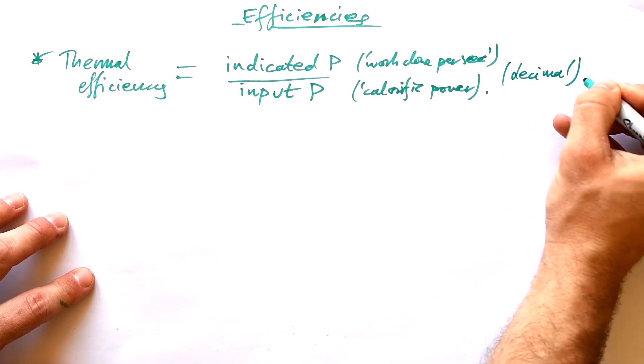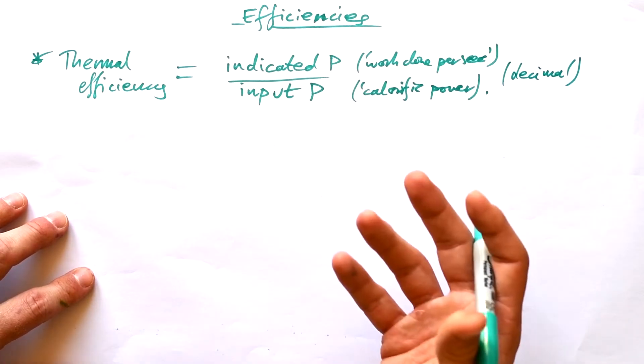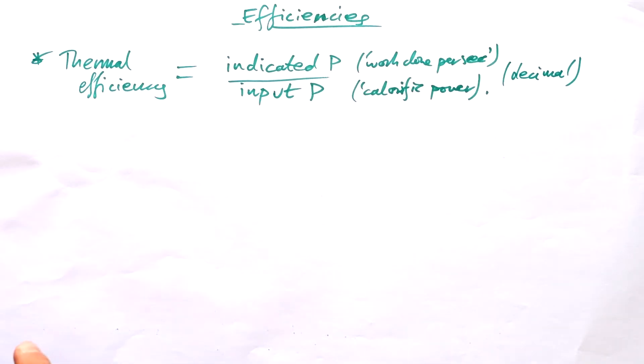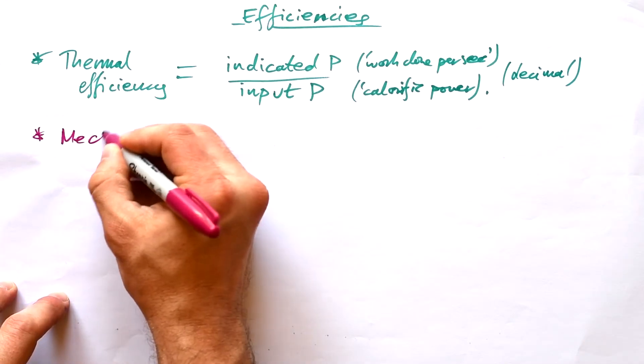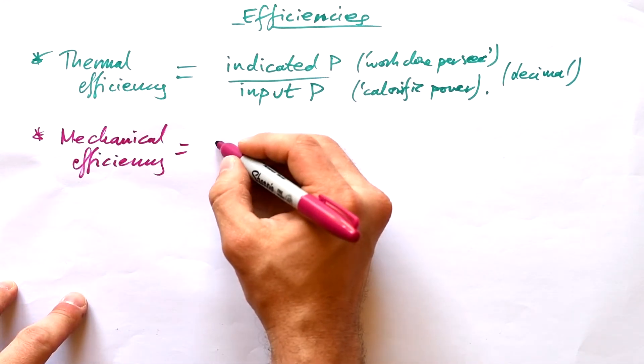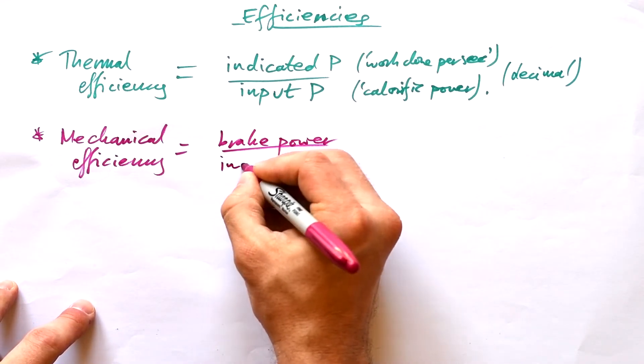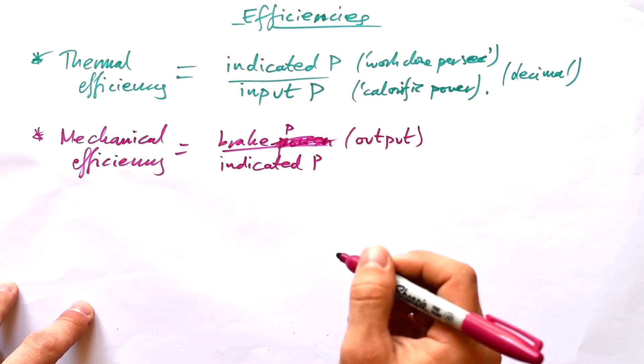And so this is going to give us a decimal answer. And in fact, that's easier when it comes to calculating other things. We don't need to turn it back from a percentage into a decimal in order to use it. Then we have mechanical efficiency. And so we said that we have our brake power, that's what's actually going to be used to drive our car, divided by the indicator power.